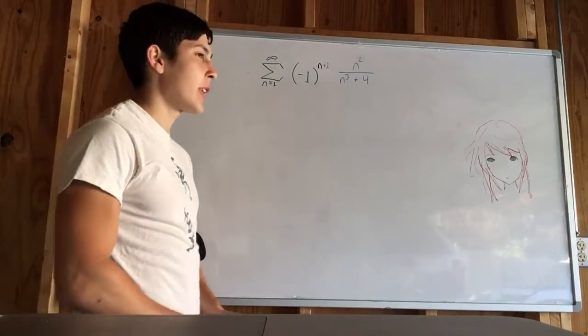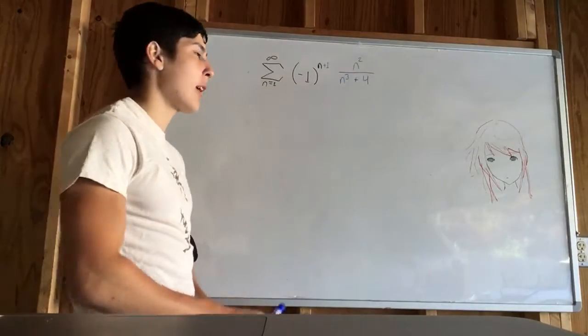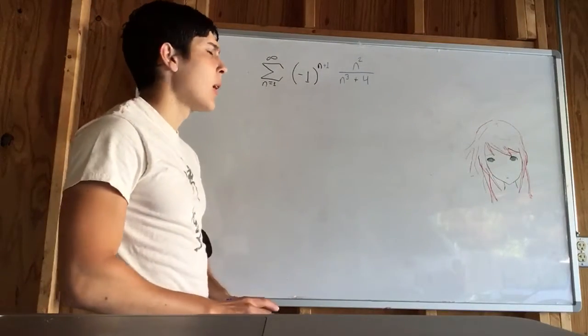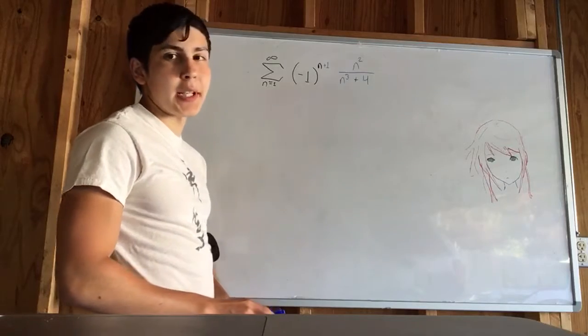Okay, we have an alternating series. We can tell it's an alternating series because we have negative n to some power. It could be to power n, to power n plus 1, whatever. It's going to be an alternating series.